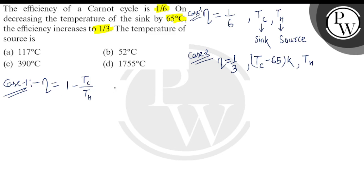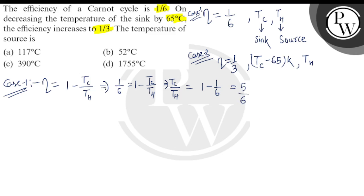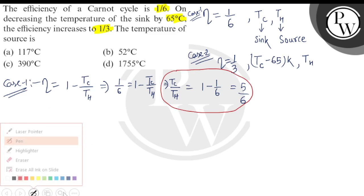That is the sink temperature divided by the source temperature. This is equal to 1/6 initially, so 1/6 = 1 − TC/TH, which means TC/TH = 1 − 1/6 = 5/6. So TC/TH is equal to 5/6. Next, let's move towards Case 2.